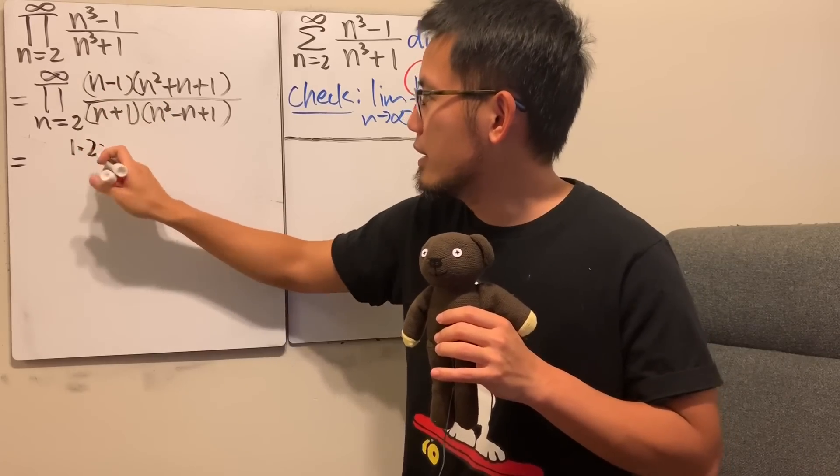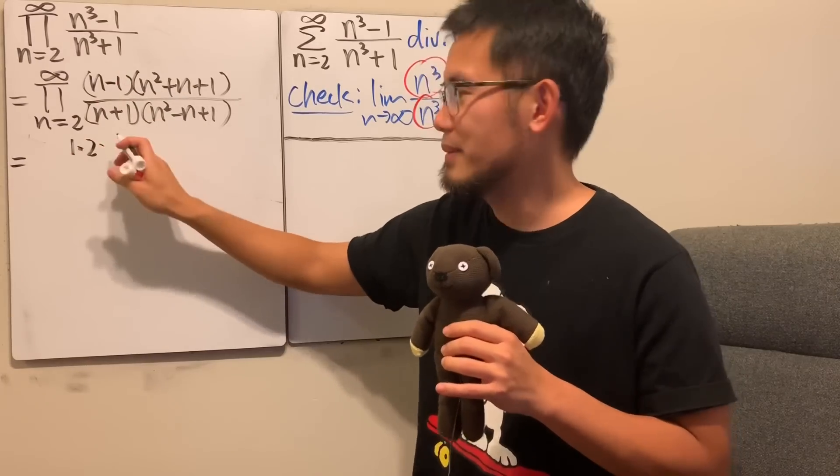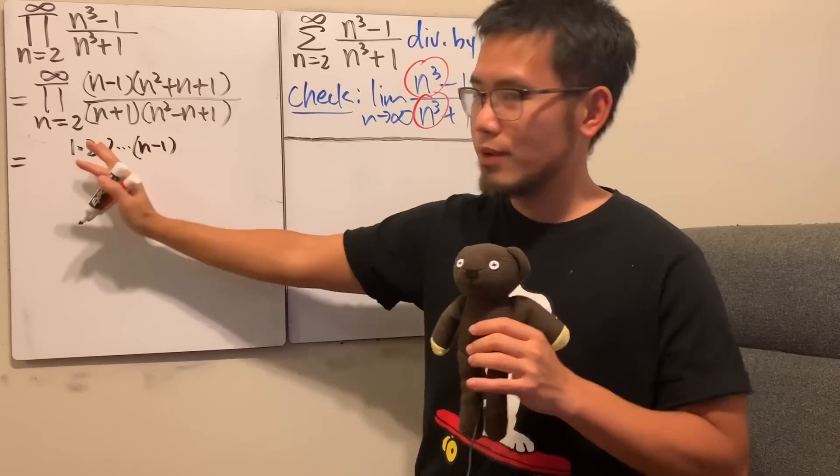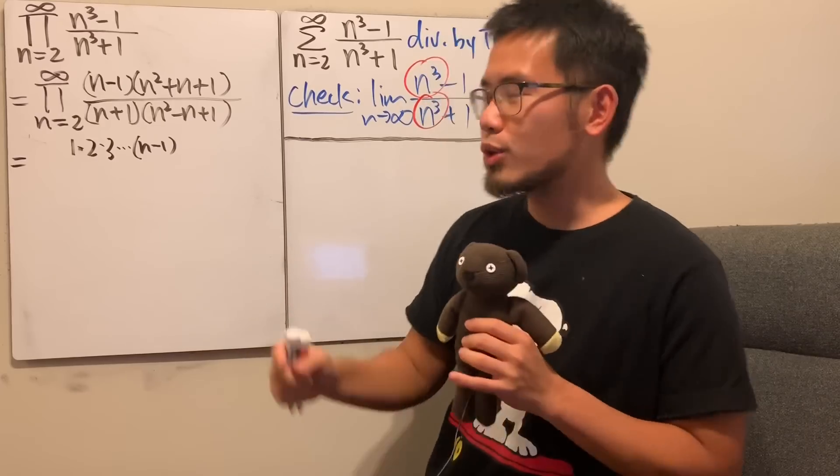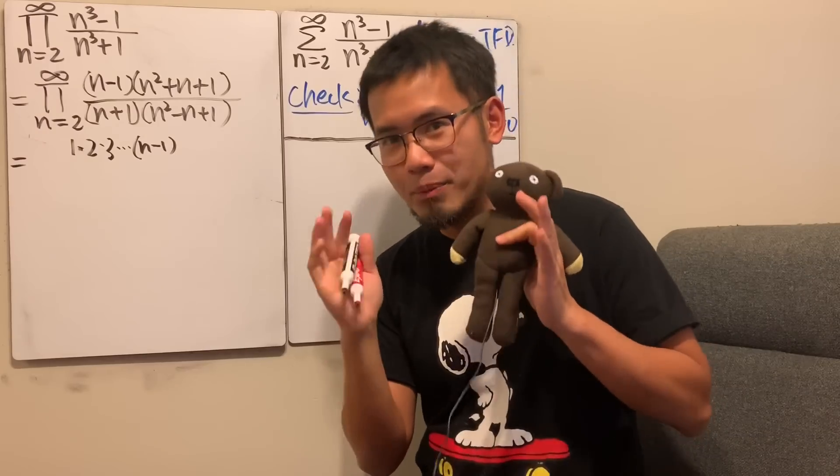and then plug in 3, you get 4, you get 3, and then all that, da-da-da, up to n minus 1, right? Because remember, when you are trying to find out the infinite sum, you can try to find out the partial sum, right? We are trying to find out the partial product.